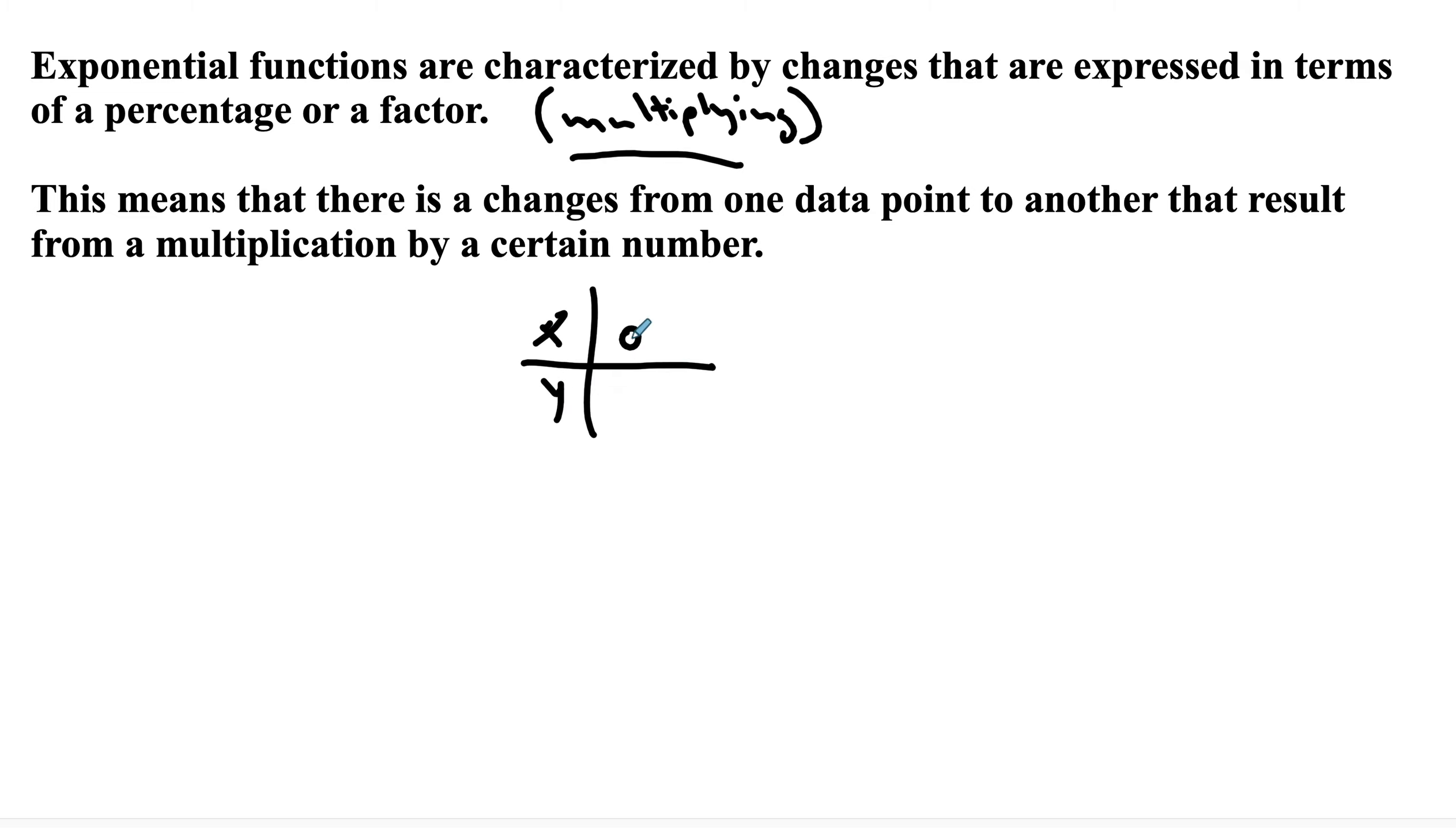So something in the form where the independent variable is changing by one, let's say that we started off at 2, then 4, then 8, then 16. Hopefully it's clear that we're multiplying by 2 in each case. And that would imply that we're looking at exponential, in this case, growth.